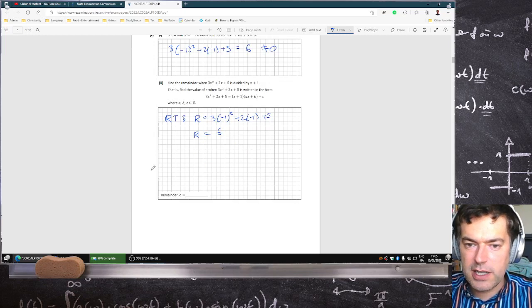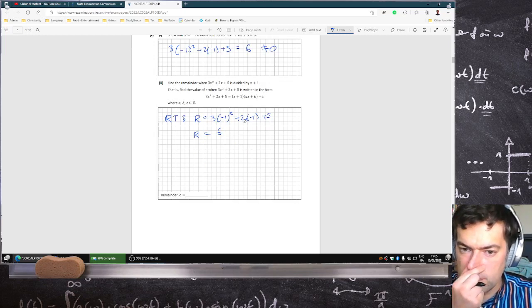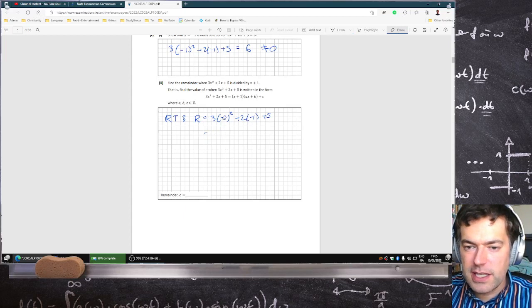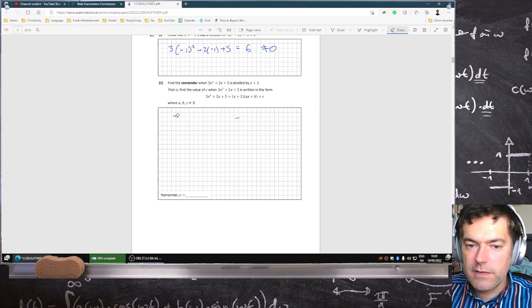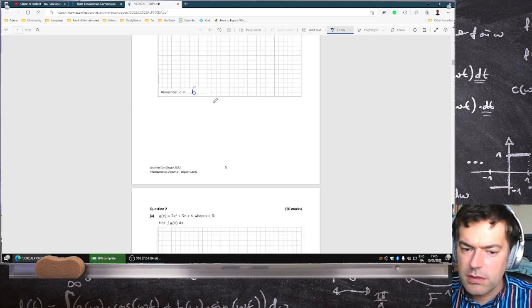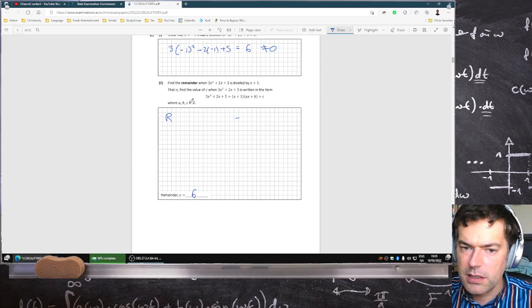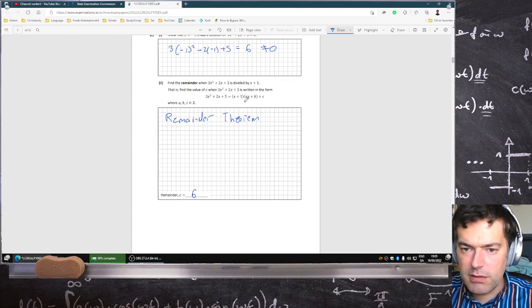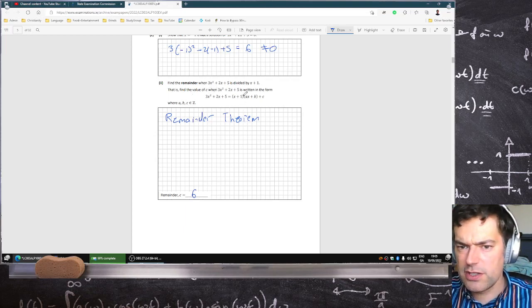That is, find the value of C when it's written in this form. Oh rats, they're making me divide it. Because I need to know what the quotient is. Okay. The remainder is 6. Oh no, they don't know. Yeah, they don't care about the A and the B. It's 6, it's just from the remainder theorem. I don't care about what the value of A and B is. Very interesting and very short. It's just 6 from the previous one.